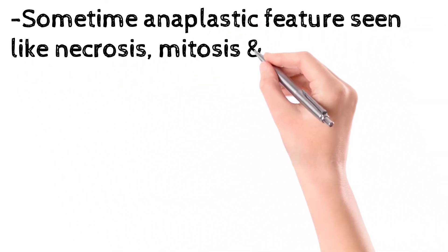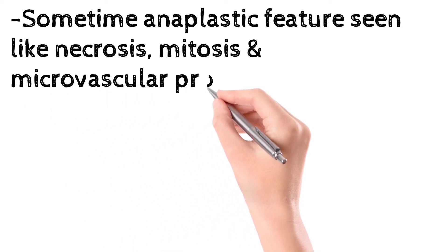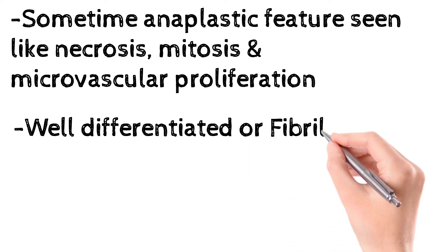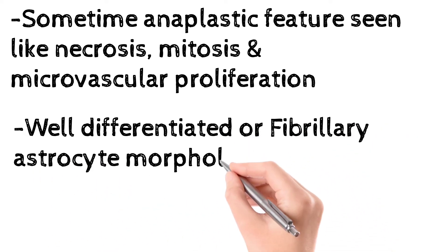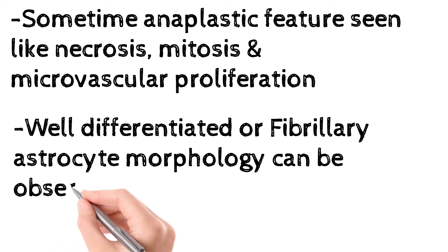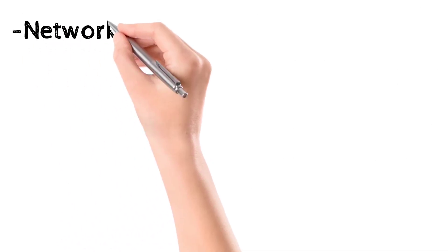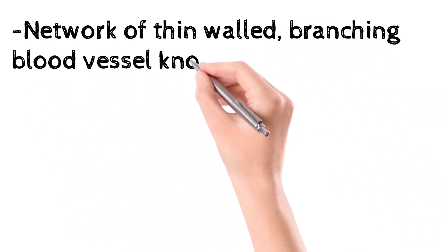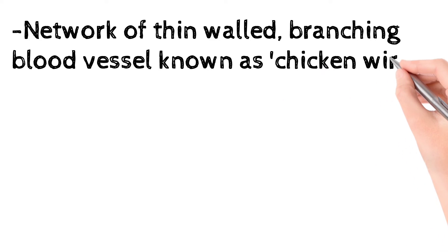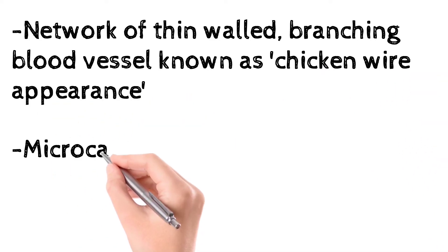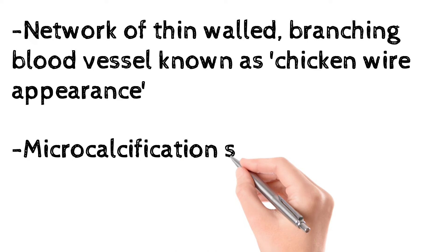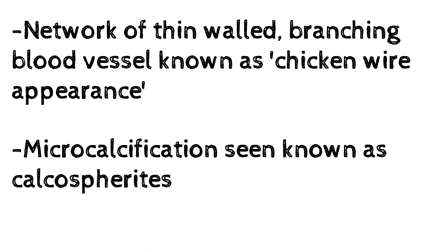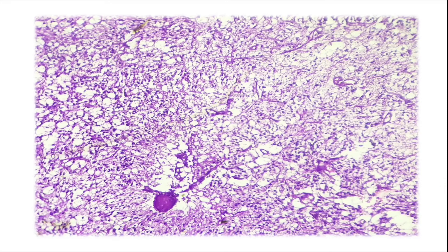Usually the tumor is well differentiated, but sometimes anaplastic features such as necrosis, mitosis, and microvascular proliferation can be seen. A network of thin-walled branching blood vessels is also seen, known as the chicken wire appearance. Microcalcifications seen in this disease are known as calcospherites.